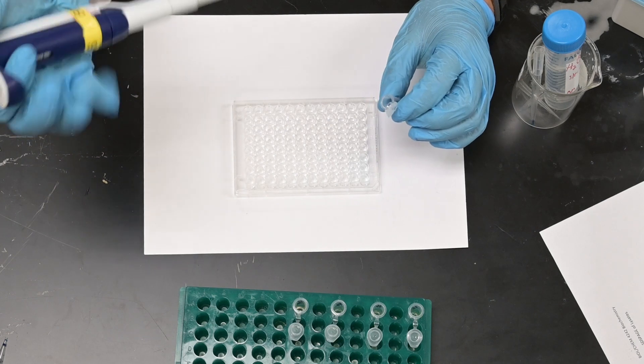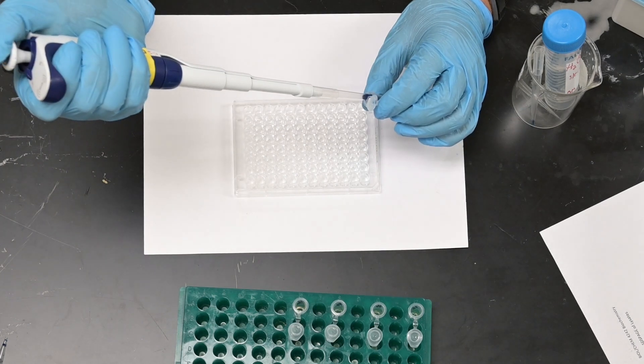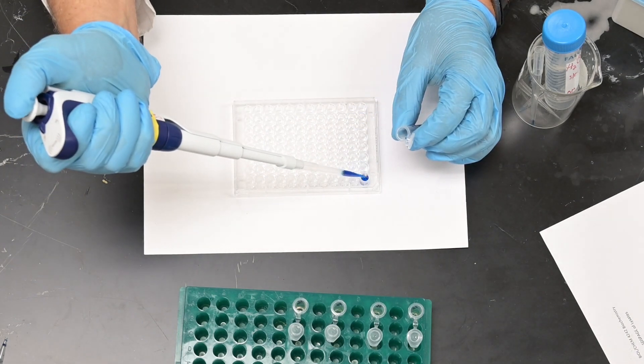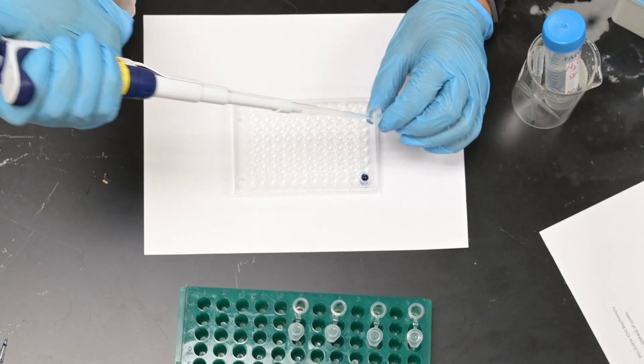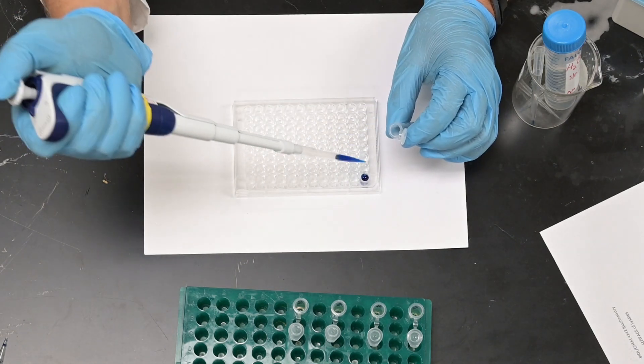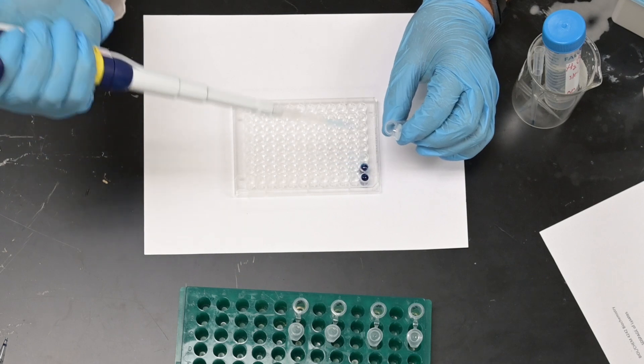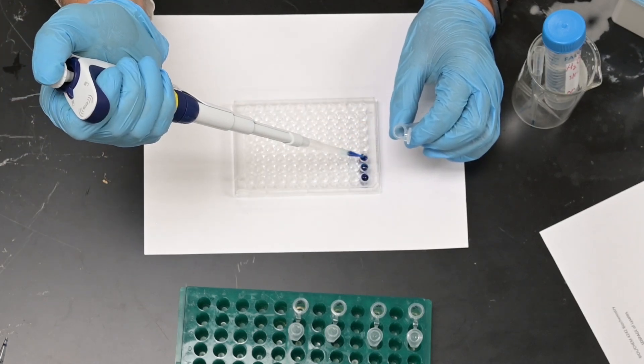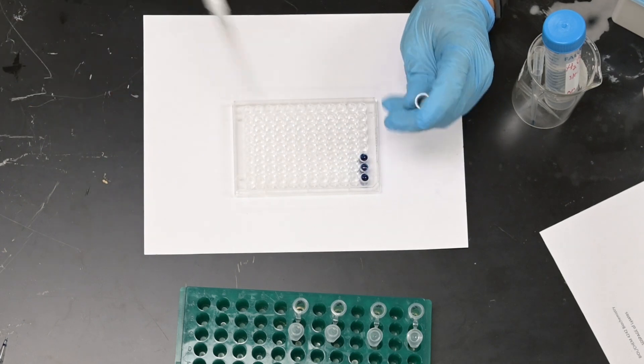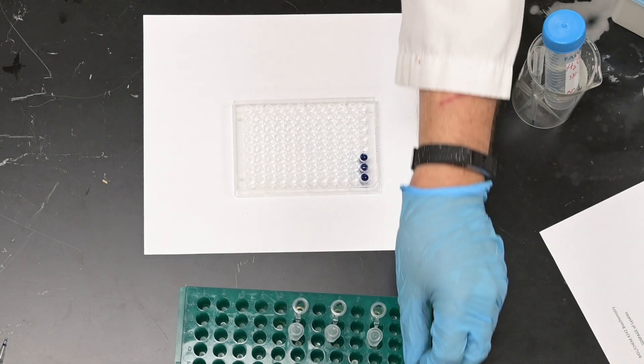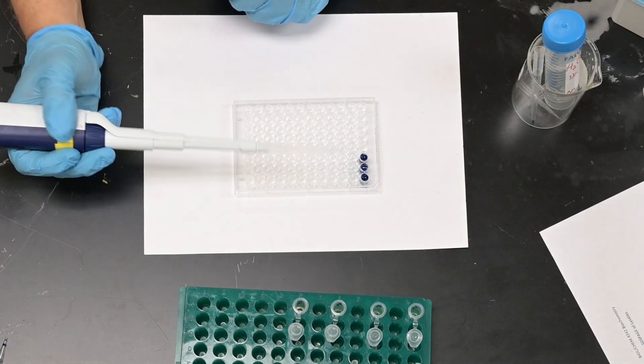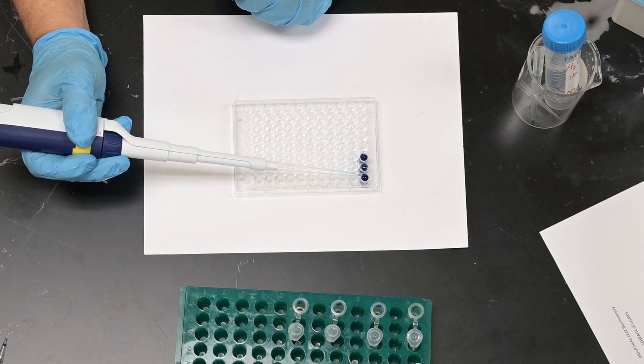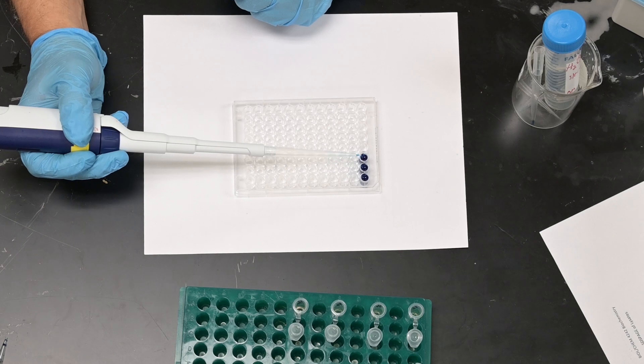Set the pipette at 0.3 and add that to A1, B1, and C1. So now I have in the plate 300 microliters of one percent blue dextran in A1, B1, and C1.